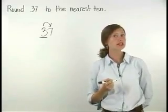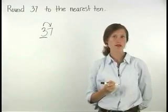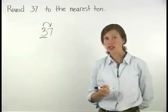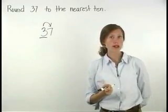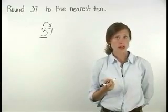The rules of rounding tell us that if the digit to the right of the rounding place is less than 5, we round down. If the digit to the right of the rounding place is greater than or equal to 5, we round up.